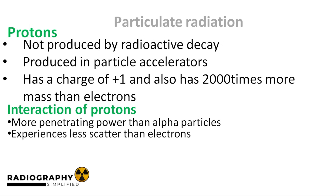Now we have protons. These are not produced by radioactive decay and thus are encountered less frequently than others. They are produced by devices called particle accelerators. In a particle accelerator, atoms such as hydrogen are ionized and exposed to a high voltage. Protons have a positive charge of one and 2,000 times more mass than electrons. As for its interactions, it has more penetrating power than alpha particles, and because of its higher mass, it experiences less scatter than electrons.